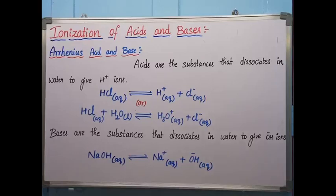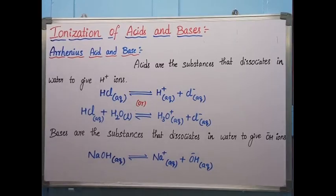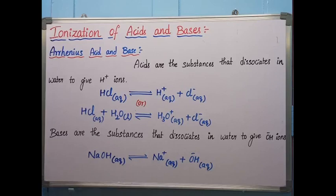Hello students. In today's video I will explain the topic ionization of acids and bases. Ionization is a process where acids and bases dissociate into different ions when added to water. In order to understand the ionization process more clearly, we must know the different definitions of acids proposed by various theories. In this video I will explain about Arrhenius acid and base, Lewis acid and base, and Brønsted acid and base.